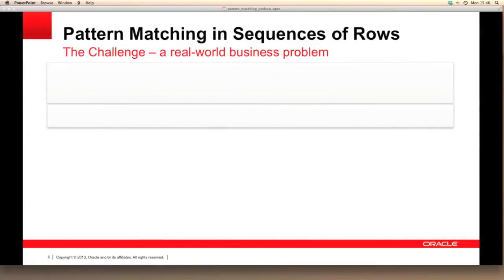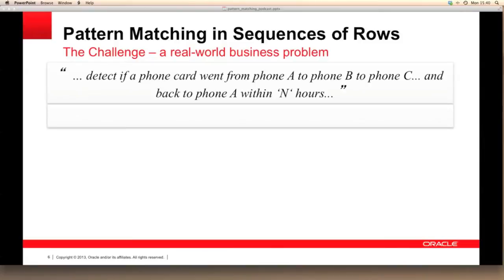Here's a real-world business case from a telecommunications company that is trying to understand how the SIM cards in its phones are actually being used by its customers. The company suspects that some of its SIM cards are being used in multiple handsets, and they want to look for the pattern where a SIM card goes from phone A to phone B to phone C and then back to phone A within a specified time period, and where this pattern is repeated multiple times within a seven-day period.